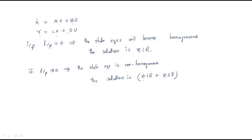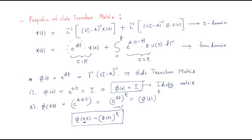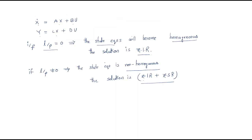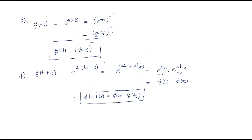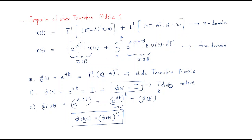This is the important point. When discussing state space analysis: if the input is zero, the state equation becomes homogeneous and the solution is the zero-input response. If the input is not zero, the state equation becomes non-homogeneous and the solution is the zero-input response plus the zero-state response. Using these properties of the state transition matrix, we can understand state space analysis very easily.